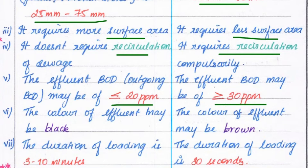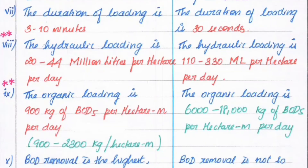The color of effluent in the slow rate trickling filter is black, while for the fast rate trickling filter the color of effluent is brown. The duration of loading time in slow rate is 3 to 10 minutes, but in fast rate it is only 30 seconds, which is very much less.